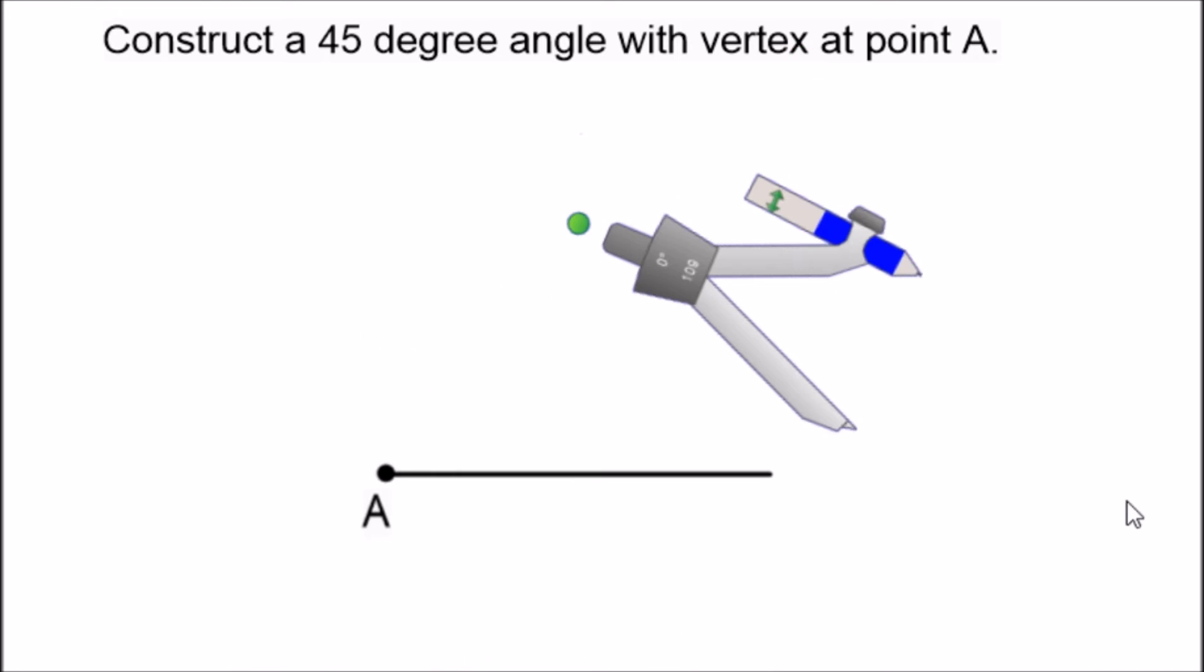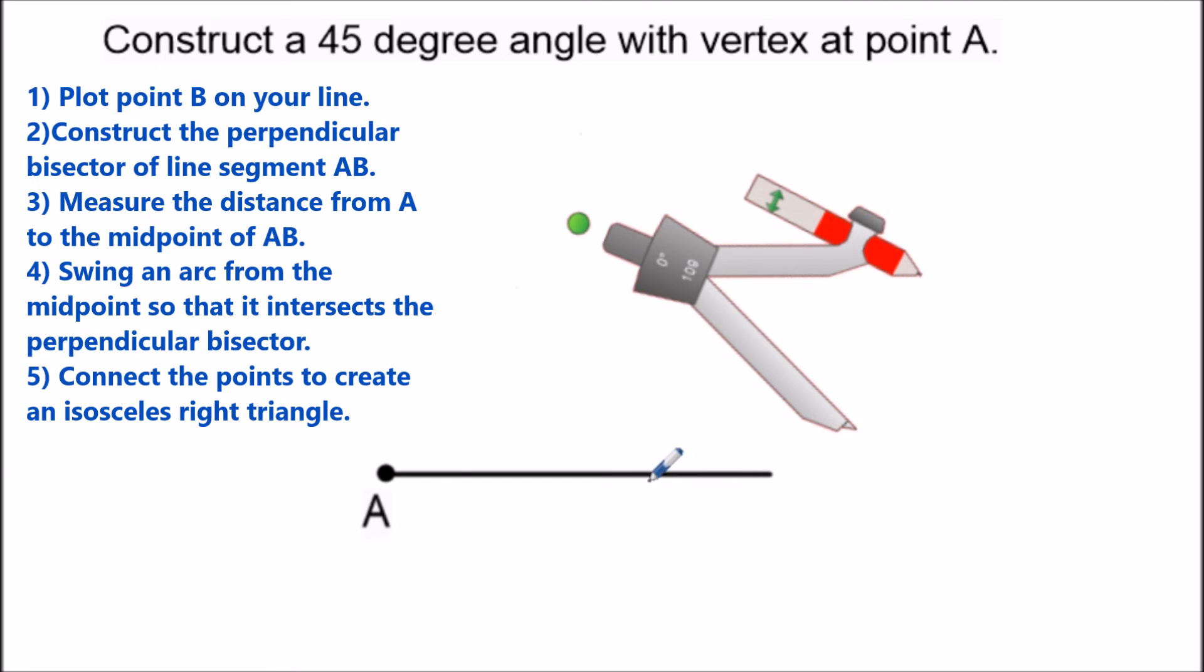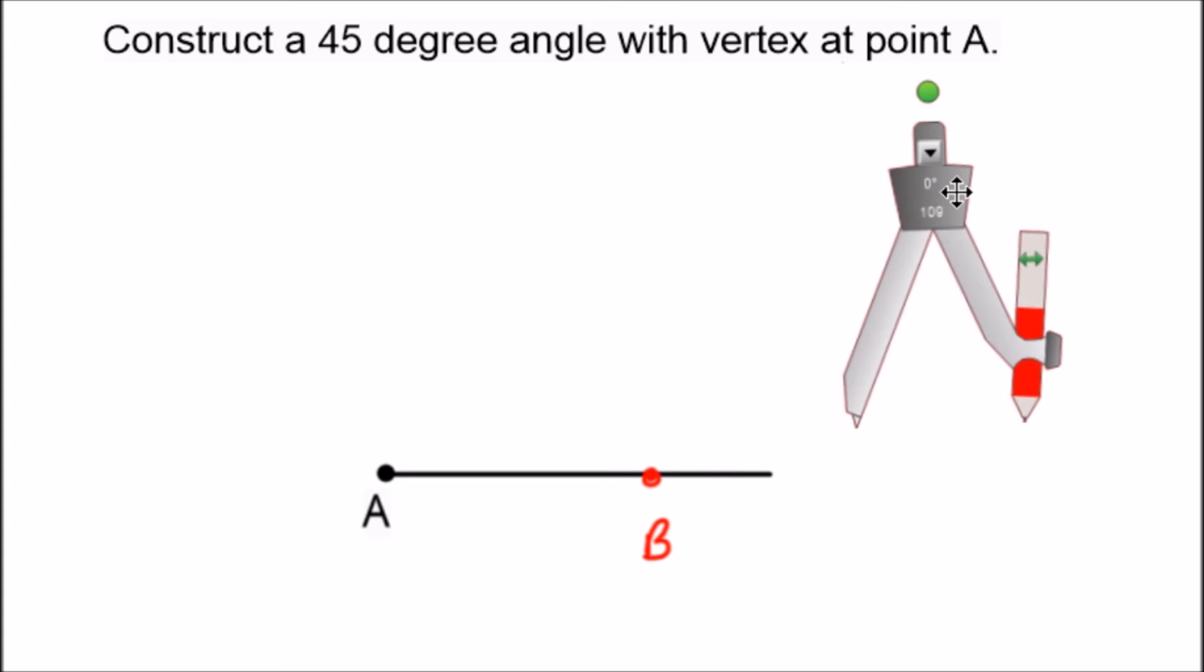So now for option two, what we want to do for this option is follow the sequence of steps. So we introduce another point, let's call it point B, and we're going to construct the perpendicular bisector of line segment AB.